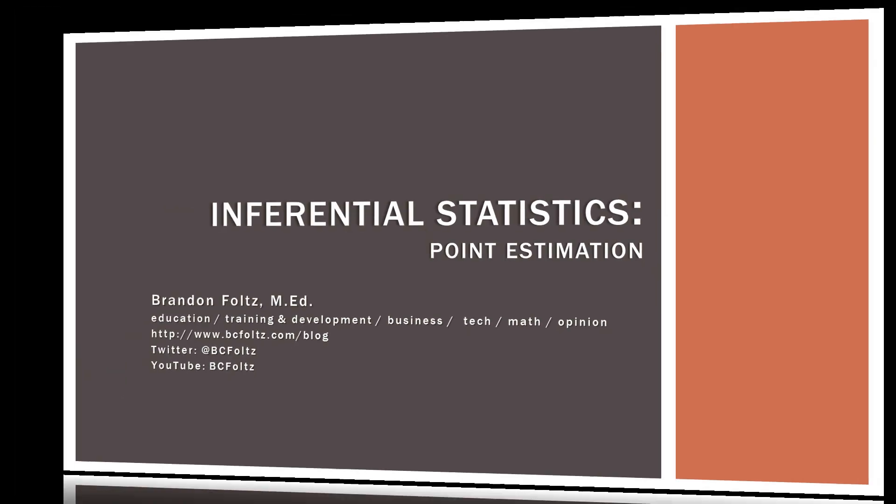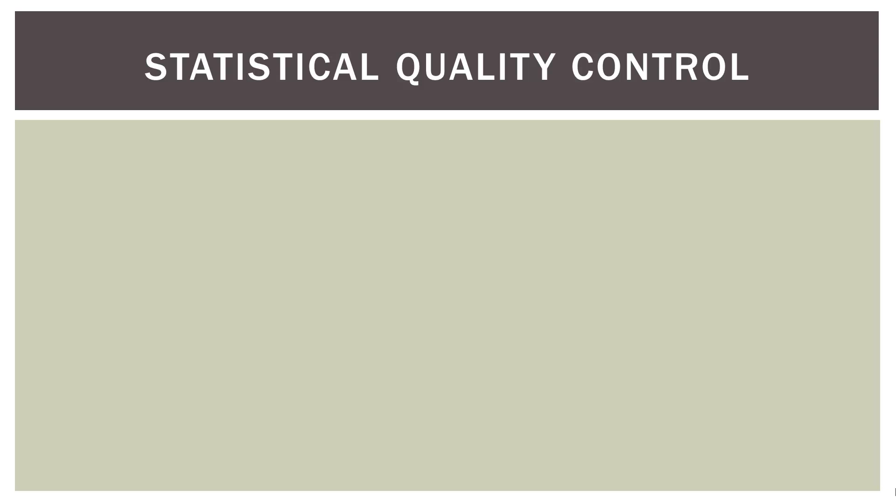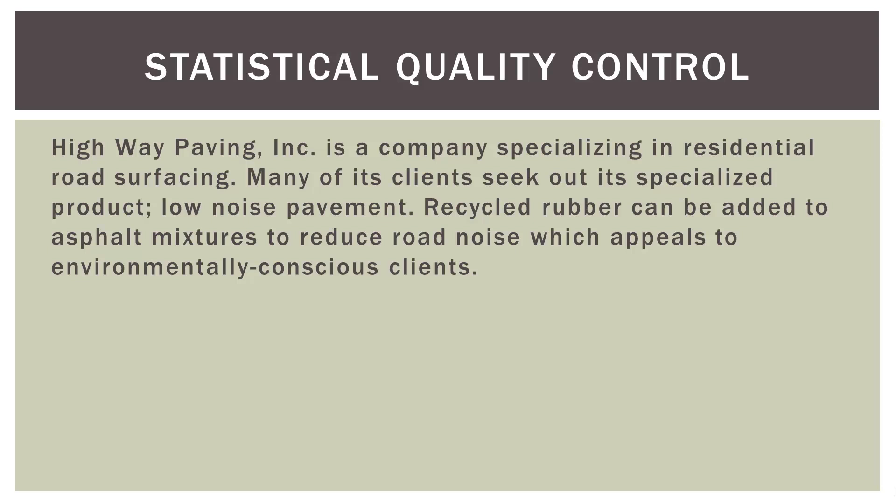So our example comes from the field of statistical quality control, also known in other forms as Six Sigma. Highway Paving is a company specializing in residential road surfacing. Many of its clients seek out its specialized product: low noise pavement. Recycled rubber can be added to asphalt mixtures to reduce road noise, which appeals to environmentally conscious clients. When car tires roll over this type of pavement, it reduces road noise not only outside the car, which is good for the neighborhood, but also inside the car as well. Plus it recycles rubber — old tires do not go into landfills; they get chopped up and put into the pavement. So it's sort of a win-win and the product is very popular.